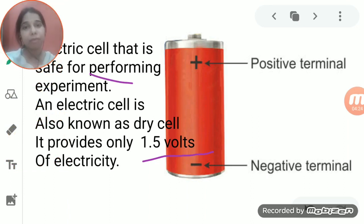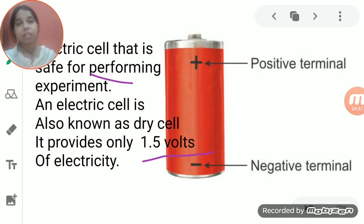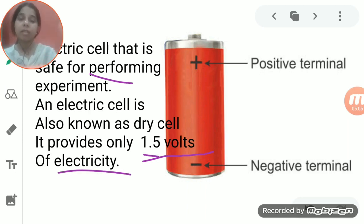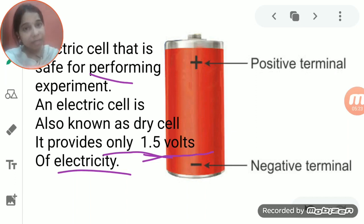The electric cell is safe for performing experiments in science labs or school. An electric cell is also known as a dry cell. The name 'dry cell' is used because it does not contain any liquid chemical in it — it consists of chemicals in a non-liquid form.